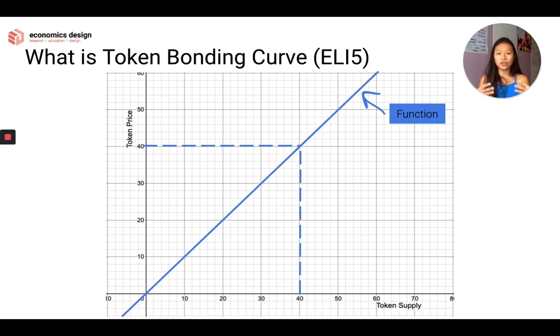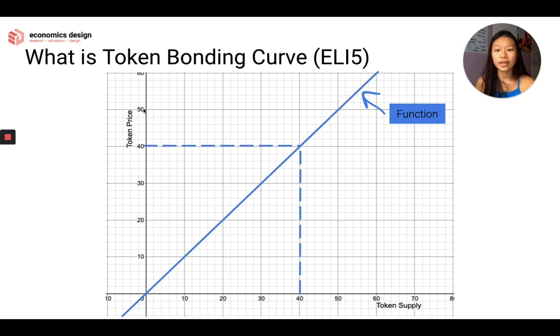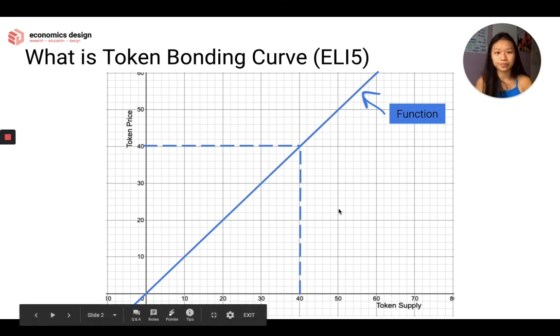So I hope that's simple and basic enough to get us started, to just give you an understanding that this function is basically explaining the relationship between the token supply and the token price. And then the price you pay for buying additional tokens is the area under the graph.